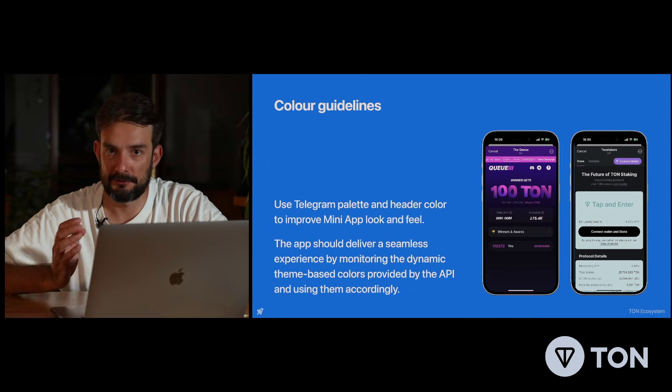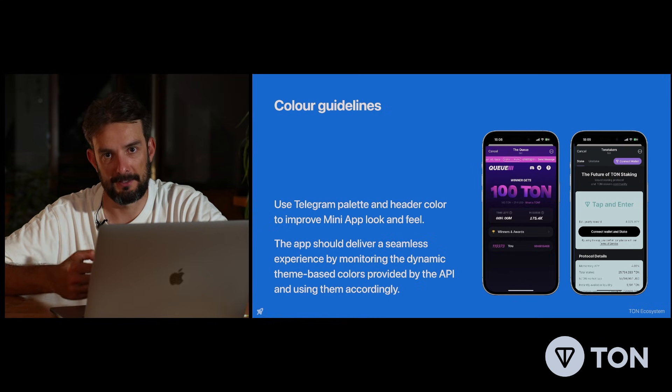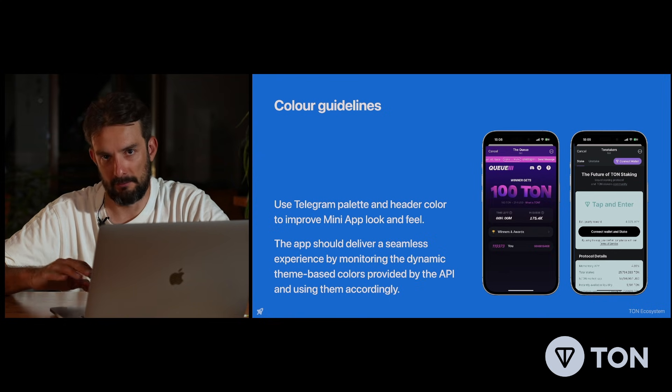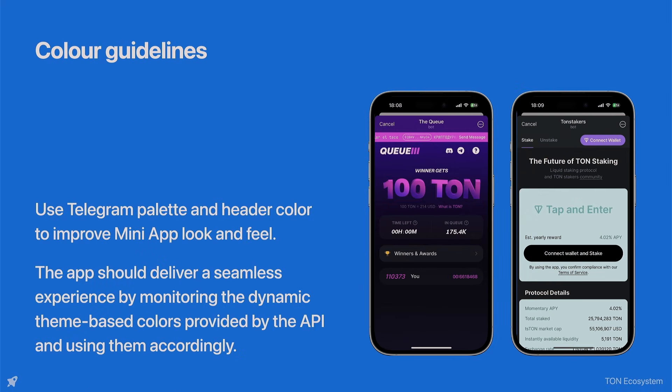Also, users love to create their own themes and guidelines within Telegram Messenger. It's not only about light and dark themes — it's also about custom themes where users provide their own custom color guidelines. It's always nice when apps follow these guidelines. You will receive CSS tokens within your Telegram MiniApp application, and you can use them for backgrounds, font color, and header color. This also creates a flawless user experience between Telegram Messenger and MiniApps.